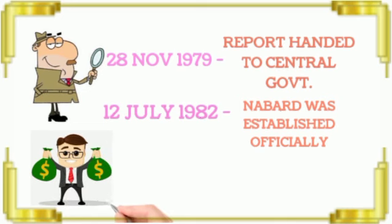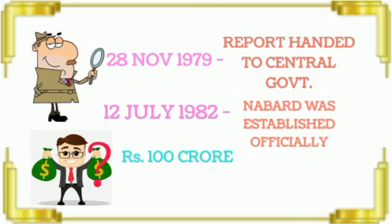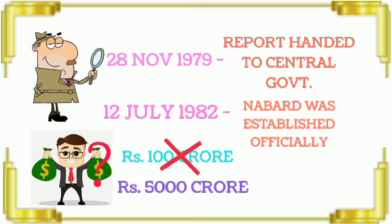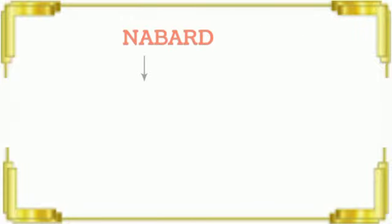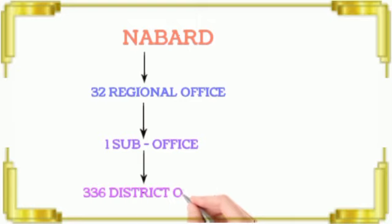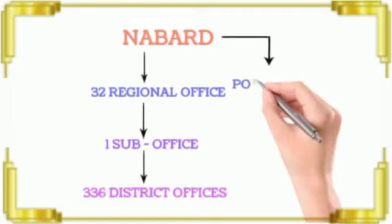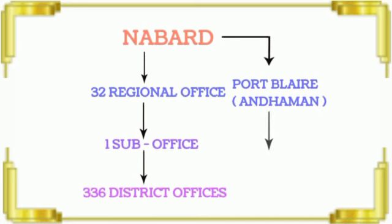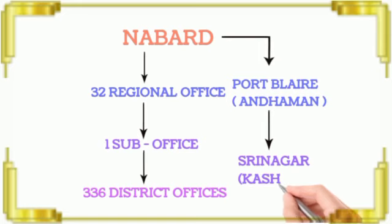What is the initial capital? The bank has several branches. There are 32 regional offices, one sub office, 36 district offices, and 43 sub offices. This includes an office in Port Blair and an office in Srinagar, Kashmir. This is the overall structure of NABARD.